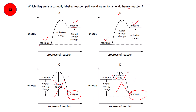Now compare A and B and look for the overall energy change. The overall energy change is the energy difference between the energy of products and energy of reactants. It is correctly labeled in option A. In option B, the energy difference between the products and reactants should be the overall energy change, but it is labeled wrong. So the right option here is A.